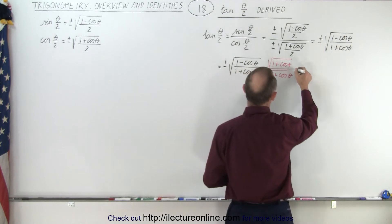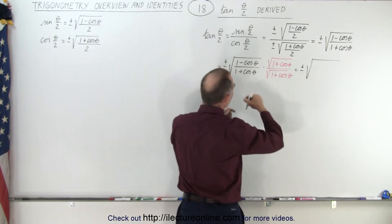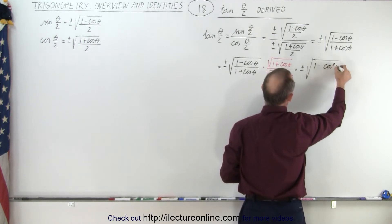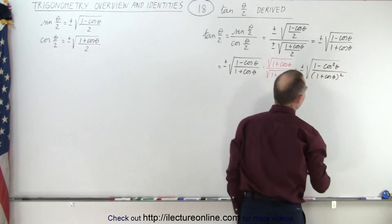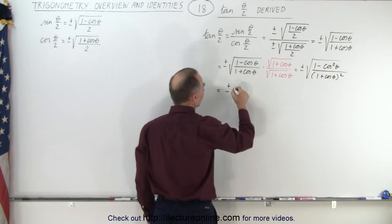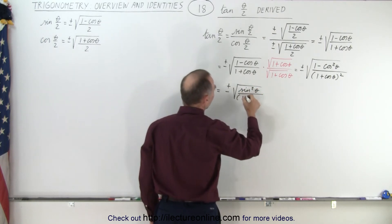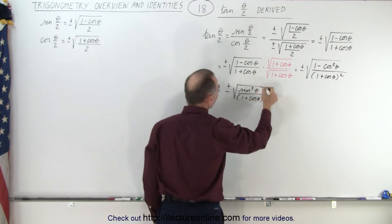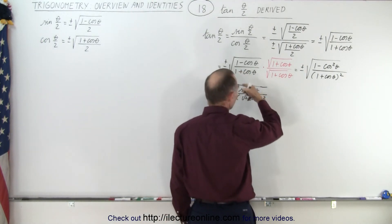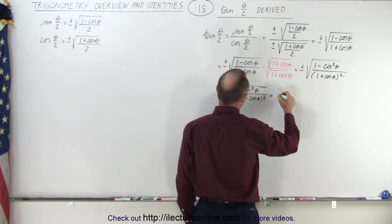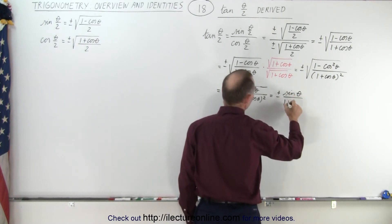When we do that, we get plus or minus the square root of: in the numerator we have two binomials with a sign difference — (1 minus cosθ)(1 plus cosθ) — giving us 1 minus cos²θ; in the denominator we get (1 plus cosθ) quantity squared. Since 1 minus cos²θ equals sin²θ, and taking the square root cancels the exponents, we end up with plus or minus sinθ divided by (1 plus cosθ).